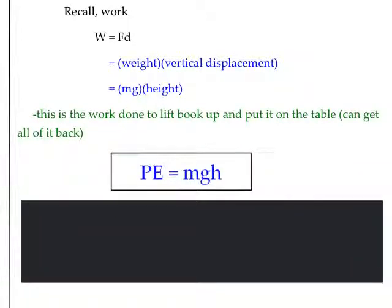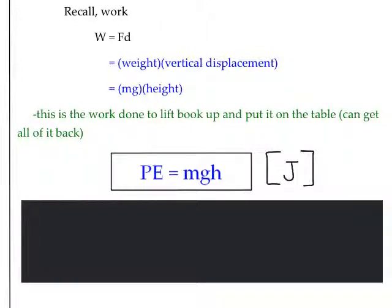The work we did against gravity is now stored in the object as potential energy, and we have the ability to get all of it back. The object can fall down and gravity can return it to its original position. So gravitational potential energy equals mass times gravity times height, and the units are joules — the same as work.